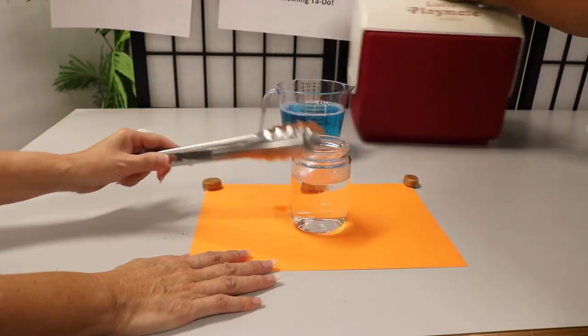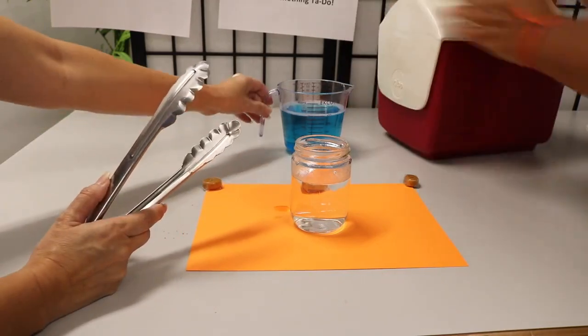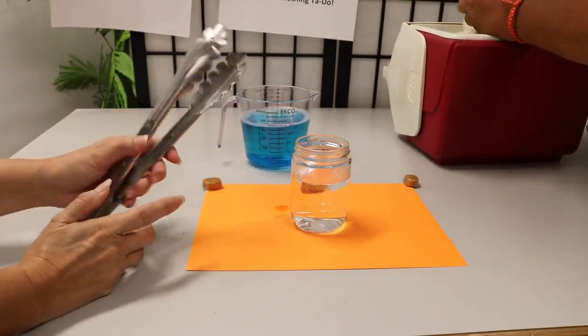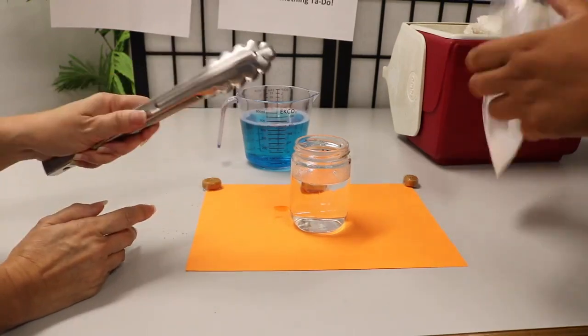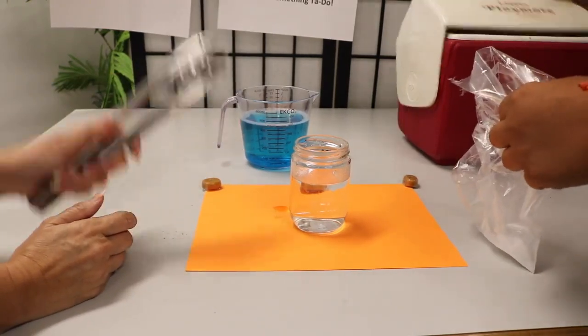The reason that we have tongs and safety glasses is because we also have dry ice. Dry ice in the cooler. In the cooler, yes. So I'm gonna pull out this little bag.